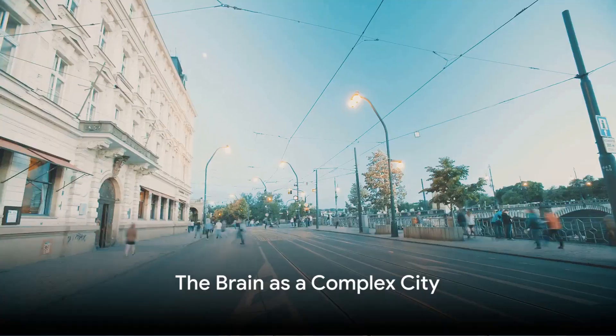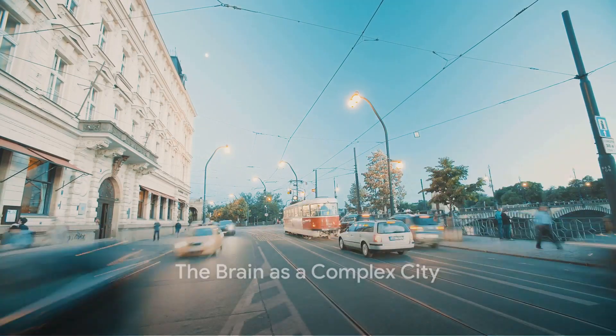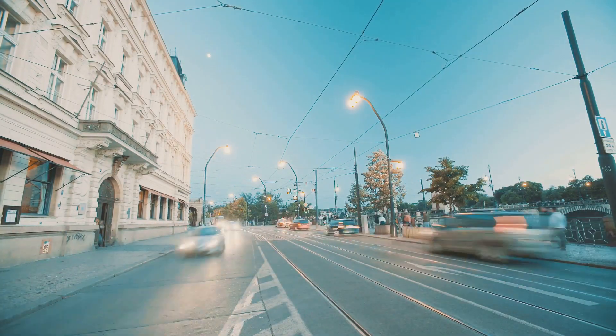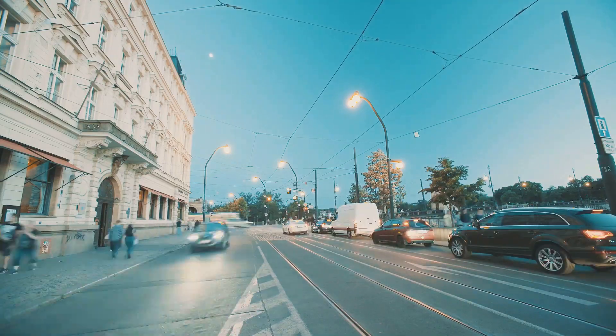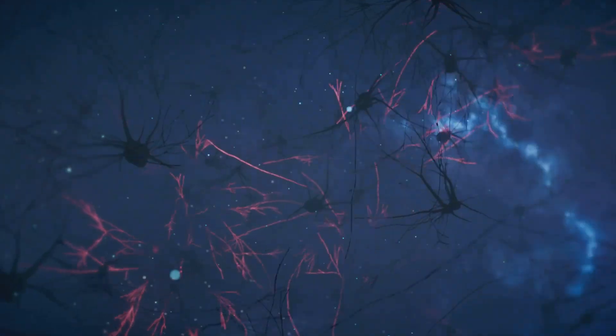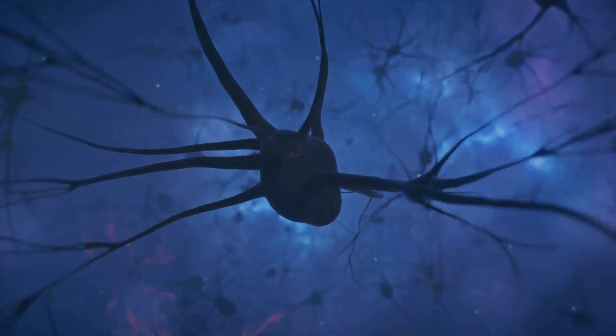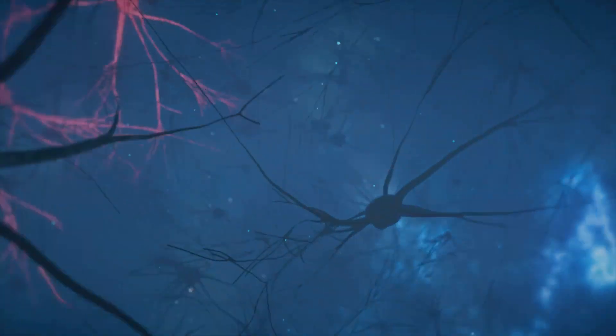Imagine a bustling city, the way each individual, each car, each subway train moves and interacts. It all forms a complex web of activity. This is quite similar to how our brains function, with countless neurons interacting and communicating.